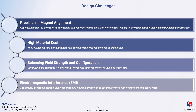Now let's shift our focus to some of the design challenges associated with halbach arrays. First and foremost is precision in magnet alignment — it's crucial that the magnets are perfectly aligned. Any misalignment or deviation can significantly reduce the array's efficiency.